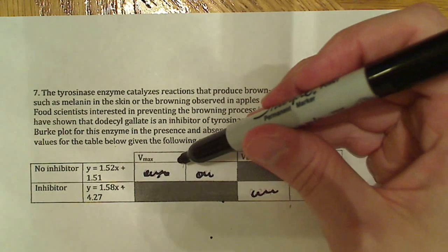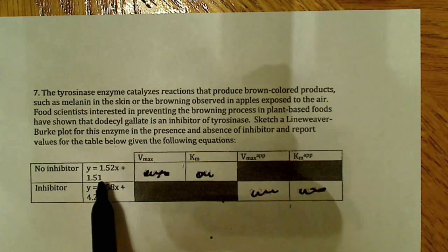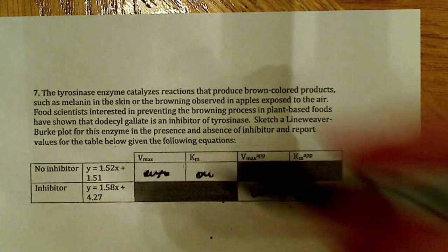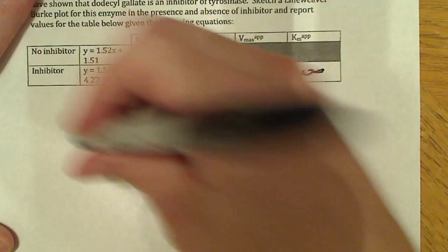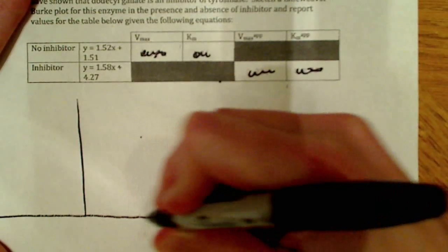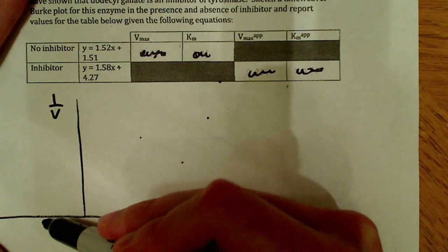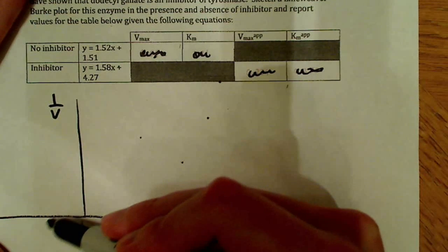The first thing they want us to do is calculate the VMAX for no inhibitor. We have this equation: y equals 1.52x plus 1.51. Let me just recall what these things are on the Lineweaver-Burk plot. This axis is 1 over V, this is 1 over S. The Y-intercept is 1 over VMAX and the X-intercept is negative 1 over KM.